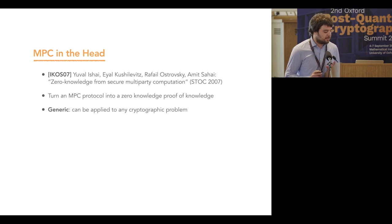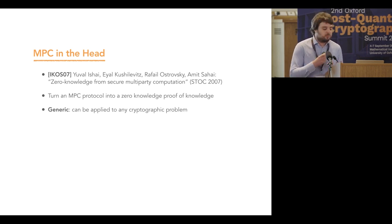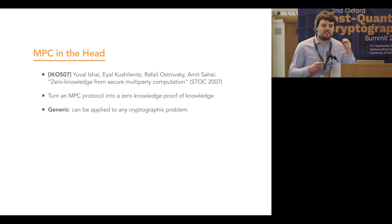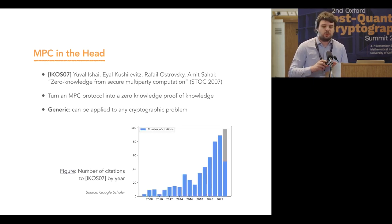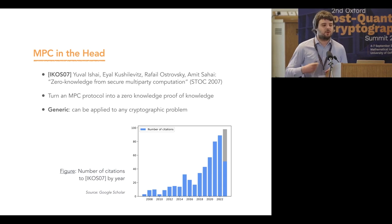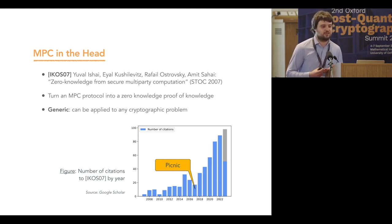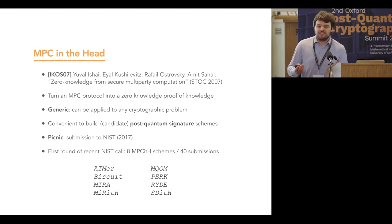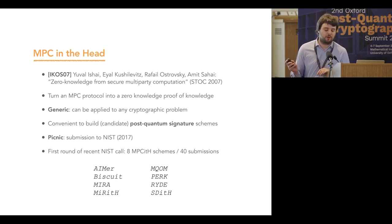The MPC-in-the-Head paradigm was introduced in an article by Ishai et al. in 2007. It proposes a generic method to transform an MPC protocol into a zero-knowledge proof of knowledge, and it can be applied to any cryptographic one-way function. For a long time it was considered a theoretical result, but since 2016 there has been more and more research and now we can build practical schemes. The first MPC-in-the-Head-based signature scheme was Picnic, submitted in the first NIST call. In this new NIST call, among the 40 submissions, eight are based on the MPC-in-the-Head paradigm — and in this talk I will focus on MIRA and RIDE.